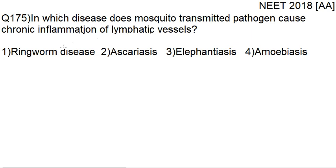The question reads: in which disease does a mosquito-transmitted pathogen cause chronic inflammation of lymphatic vessels? The options given are ringworm disease, ascariasis, elephantiasis, and amoebiasis.